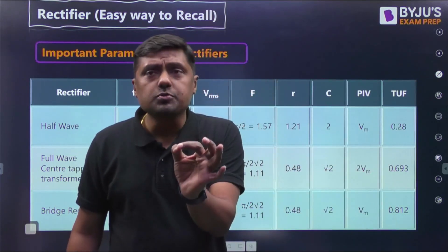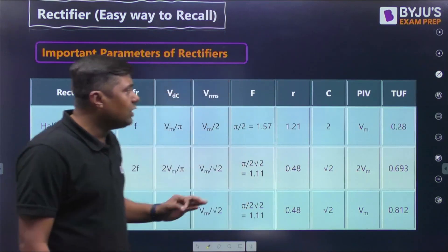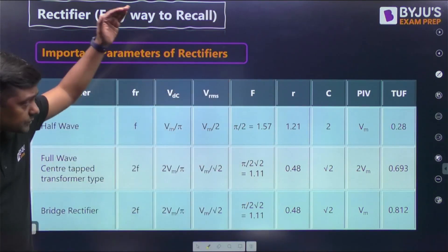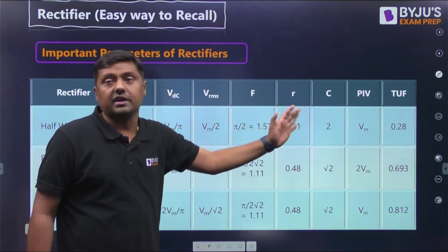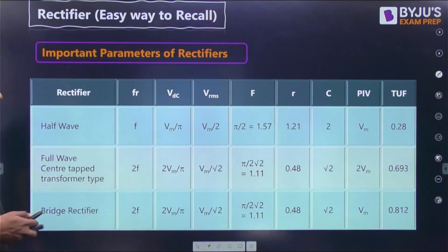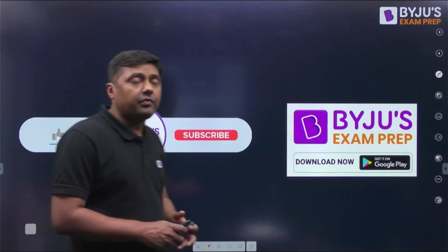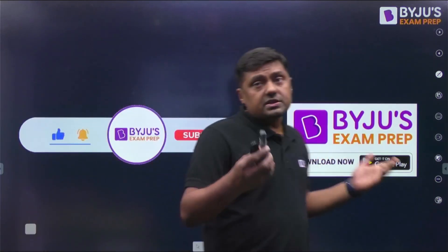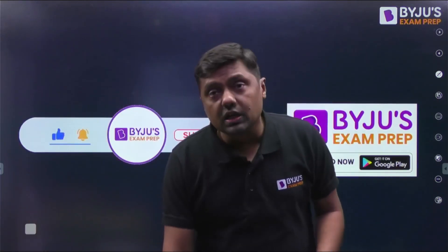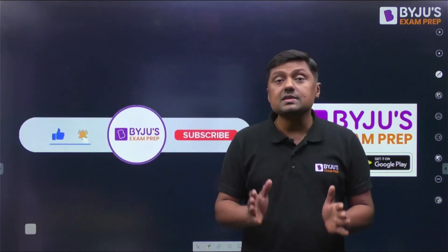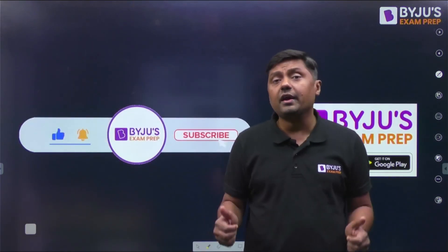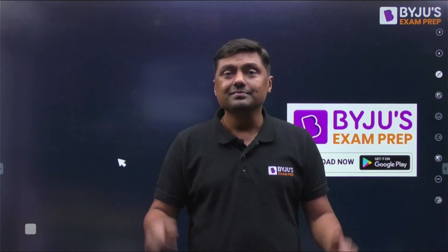In the comments box, tell me what the ideal values of form factor, ripple factor, and crest factor are. In a coming session, I will give the difference between the bridge rectifier and center tapped transformer type. Stay tuned, subscribe to the channel, and like the session. Thank you.